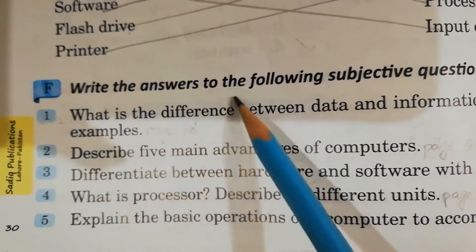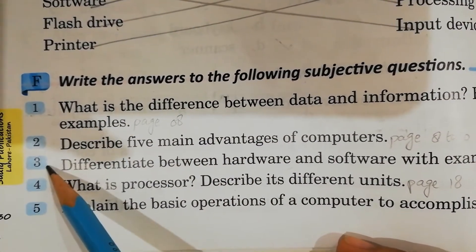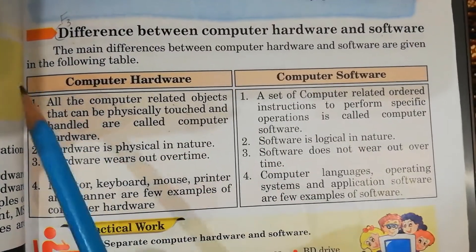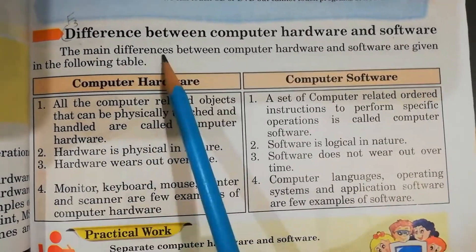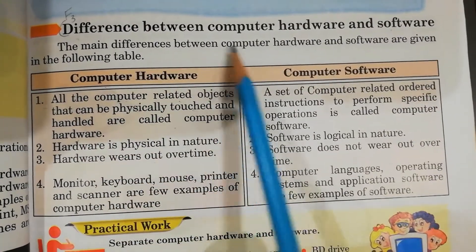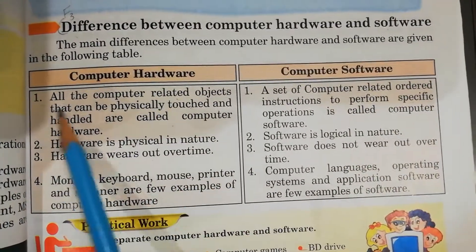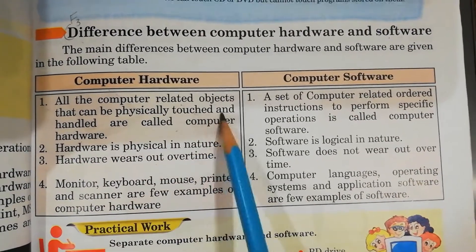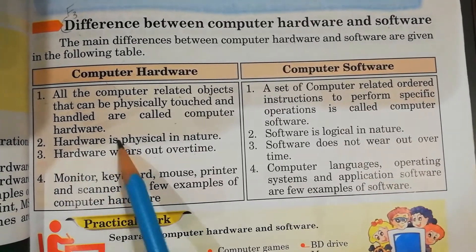Now Exercise F: Write the answers to the following subjective questions. Question No.3: Differentiate between hardware and software with examples. Its answer is on page No.13. The main differences between computer hardware and software are given in the following table. Computer hardware — Point No.1: all computer-related objects that can be physically touched and handled are called computer hardware.